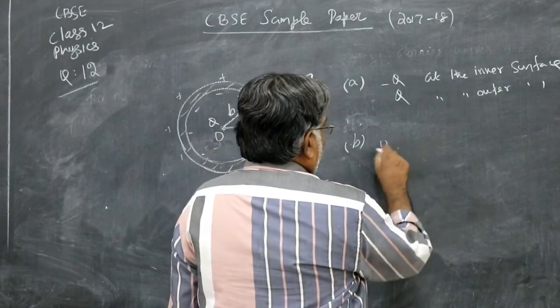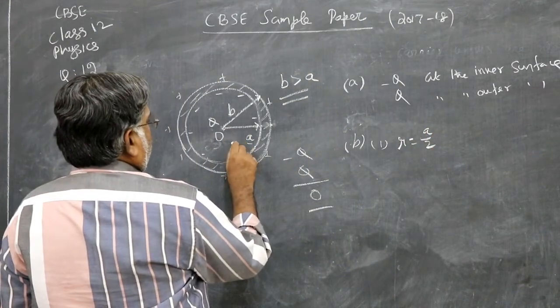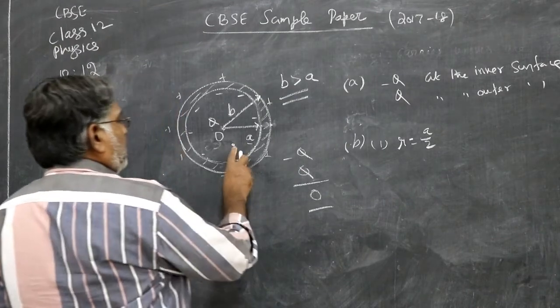Magnitude of the electric field vector when R is equal to a by 2. Somewhere here. Somewhere here approximately. What is the electric field?